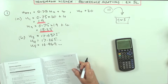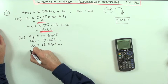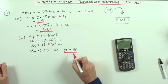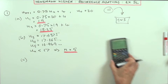The question said, smallest value of n for which U_n is less than 17, well, it's at 5. So if U_n is less than 17, then that means that n is equal to 5.